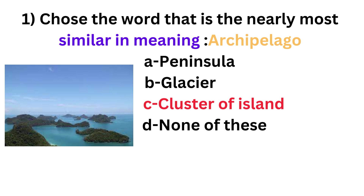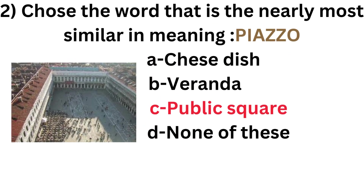The most similar meaning is option C: cluster of islands. Archipelago means cluster of islands, just like Maldives, which contains a maximum number of islands, and Indonesia. Archipelagos are most commonly found in these countries. Next one is: choose the word that is nearly most similar in meaning to 'Piazza'.